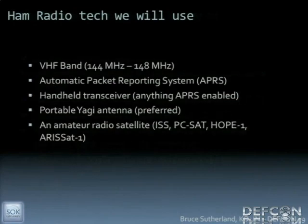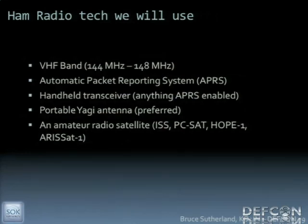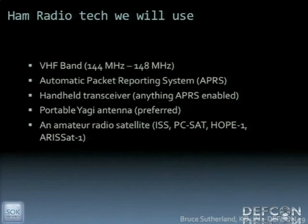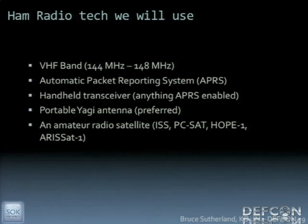The technology we're going to use is in the VHF band, between 144 and 148 megahertz. We're going to use a system called Automatic Packet Reporting System, or APRS. It's a digital system transported over an X.25 protocol — an amateur radio version of X.25 — running at about 1200 baud, which is good for the short messages we're going to be sending. APRS has three or four different types of packets: a beacon and a message. The message is what we're concerned about because that's what we're going to be transmitting in.